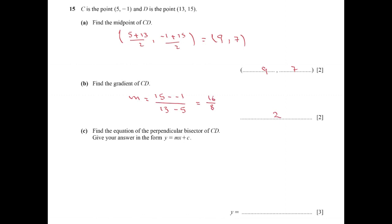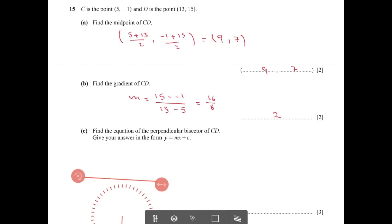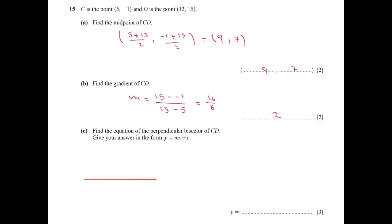Question C: find the equation of the perpendicular bisector. If we have the line segment CD, where C equals (5, -1) and D equals (13, 15), the equation of the perpendicular bisector will be the equation of the line that is the perpendicular bisector of CD, passing through the midpoint (9, 7).